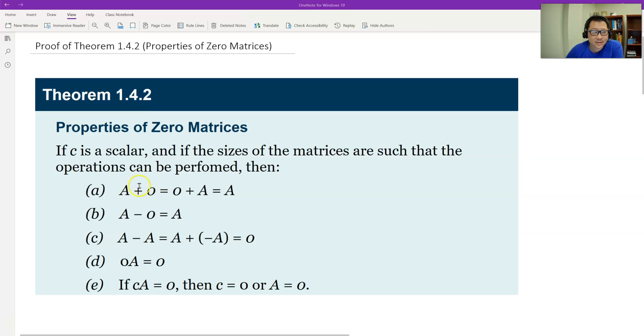See, zero matrix plus other matrix equals the original matrix. And the matrix minus zero matrix equals the original. So it's the same as like a zero is the identity of addition, right?